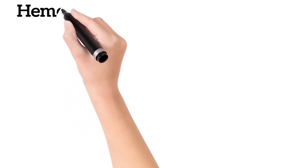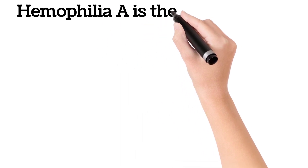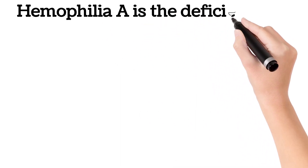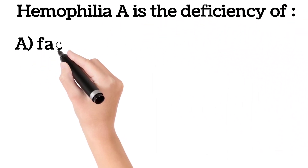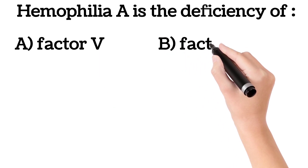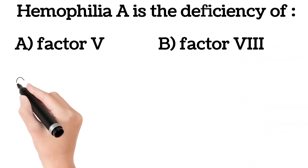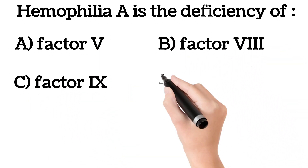Hemophilia A is the deficiency of: A. Factor 5, B. Factor 8, C. Factor 9, D. All of the above.